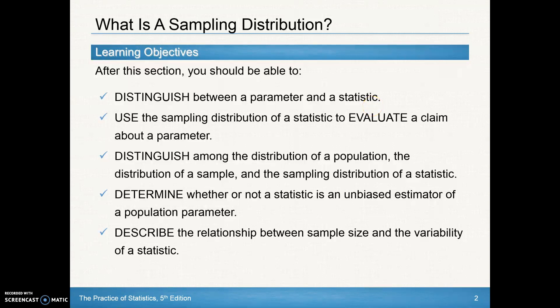The second video for lesson 7.1 will cover the rest of these pieces on how to use the sampling distribution of a statistic to evaluate a claim, distinguish among the distribution of a population, the distribution of a sample, and the sampling distribution of a statistic, determine whether or not a statistic is an unbiased estimator of a population parameter, and describe the relation between sample size and the variability of a statistic. So these last five check marks we'll cover in day two.